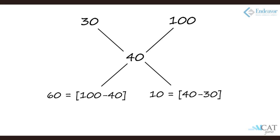The first mixture has 30 percent water and we are adding pure water, which is 100 percent water. The resultant mixture should have 40 percent water. Using the allegation method: 100 percent minus 40 percent gives 60 percent, and 40 percent minus 30 percent gives 10 percent. So the ratio is 60 is to 10, or 6 is to 1.